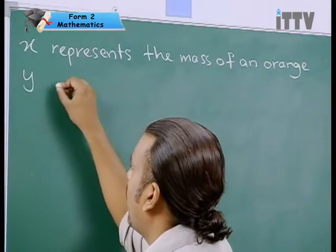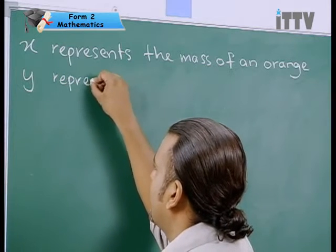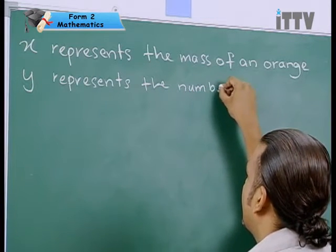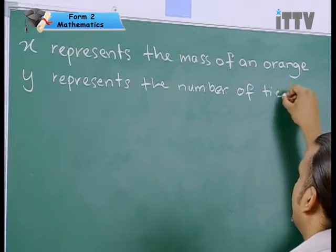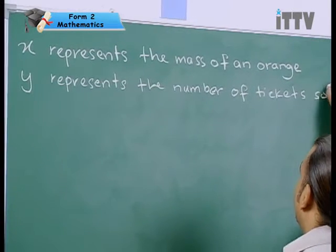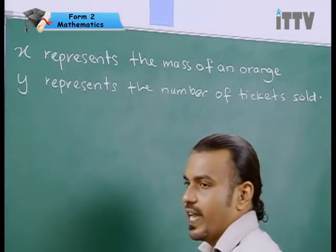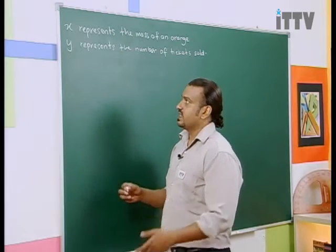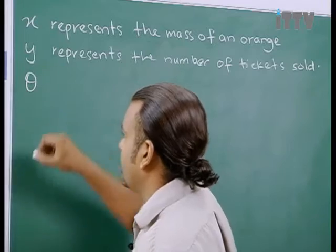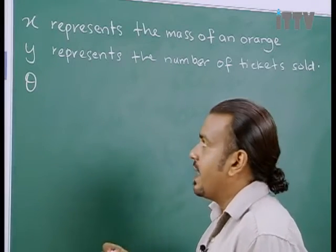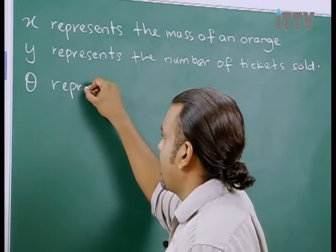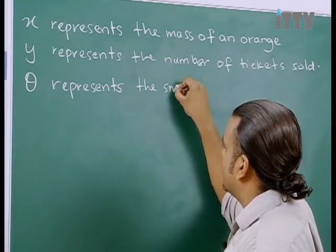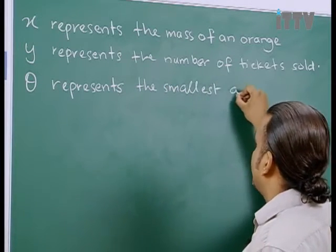You see? Because the mass of an orange is an unknown. We don't know what's the mass of an orange, so we can simply make X to represent the mass of an orange. In this case, we are using an alphabet. Or maybe something like this: Y can represent the number of tickets sold. This could be another example.